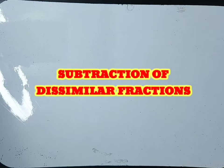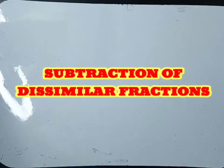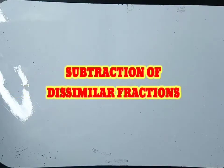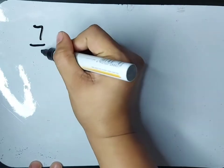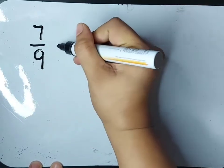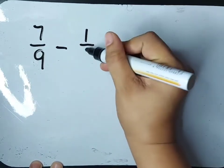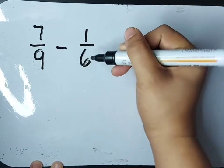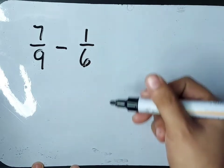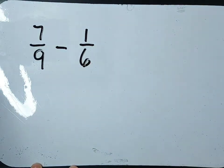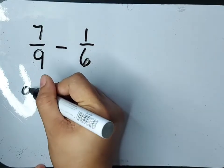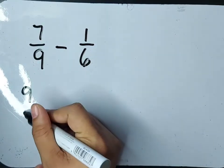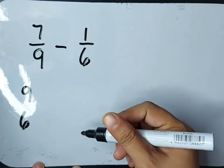Let's now have the subtraction of dissimilar fractions. Our given is 7 over 9 minus 1 over 6. Our first step is to find the least common denominator of the given fractions.